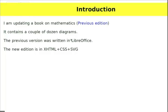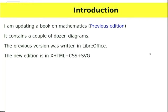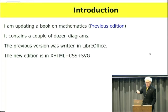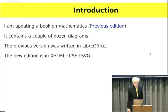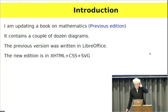I've written a book on mathematics and I was updating it. The previous version of the book was written in LibreOffice with LibreDRAW. It contains a couple of dozen diagrams, and I really hated doing those, so I decided to do the new edition of the book in XHTML with CSS and SVG.